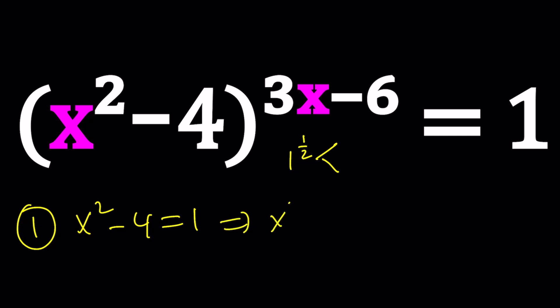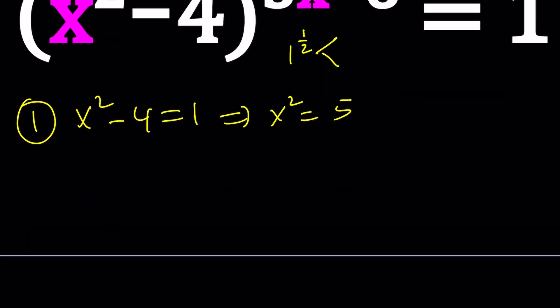From here, we get x squared equals 5, and that gives us two solutions, x equals root 5 and negative root 5. And those solutions are going to work. They're irrational, but I don't care about the exponent.